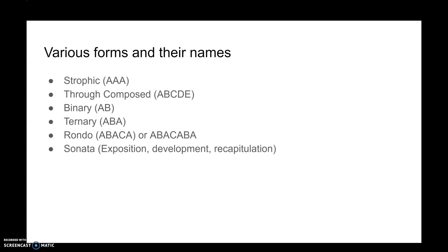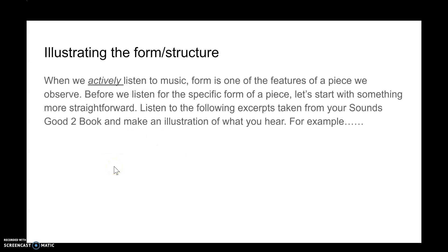Sonata form refers to a larger piece of work — we won't deal with it too much here as it's beyond what we need for this topic. The main forms to keep in mind are: Strophic (A A A), Binary (A B), Ternary (A B A), and Rondo (A B A C A...). The Rondo pattern can continue to A D A E and so on.